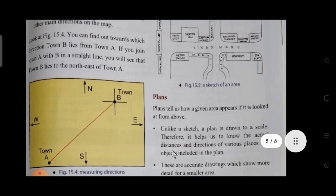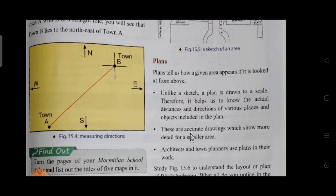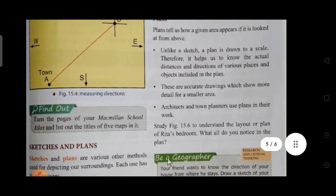Plans are drawn with exact scale. They show us actual distances, actual directions, actual places, and actual objects. These are accurate drawings that show more details of smaller areas. Architects and town planners make plans of their work, which are very accurate. If you see any house plan, it's really very accurate. We can tell exactly where the bed will be, where the washroom will be, where the room, temple, kitchen, lobby, and other areas will be. Everything is really very much accurate.